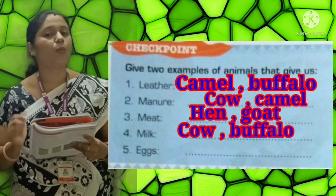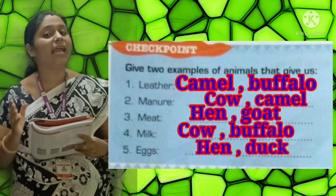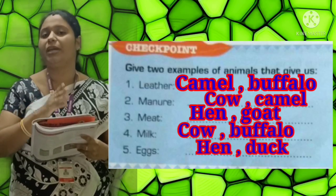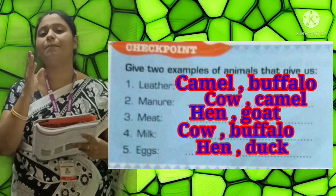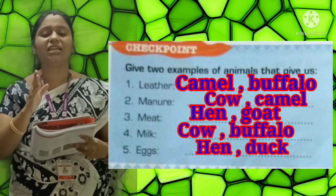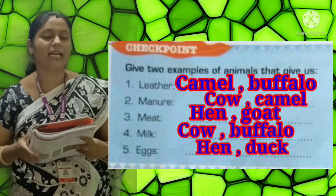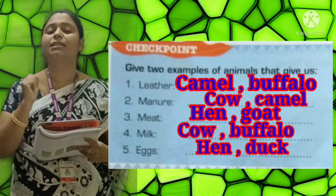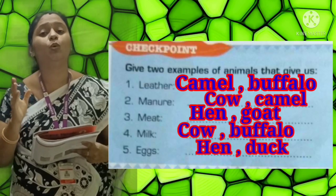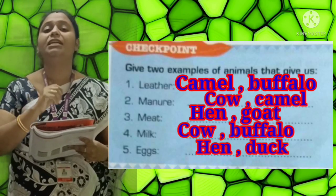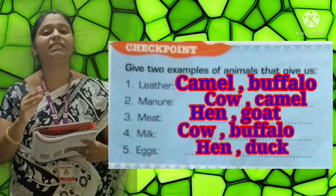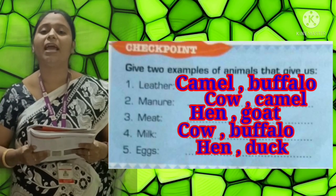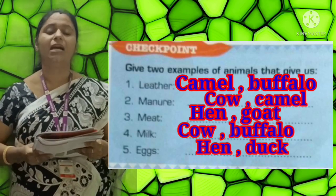Fifth: Eggs. We get eggs from Hen (H-E-N) and Duck (D-U-C-K).